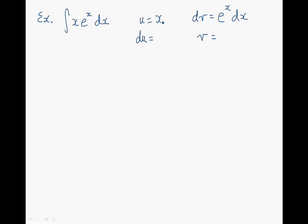So now we find the differential of u, which is du equals 1 times dx, because the derivative of x is 1, so we're left with dx. And now to go from dv to v, we take the antiderivative, and the antiderivative of e to the x is e to the power of x. Now we recall the formula found previously, which is u times v minus the integral of v du.